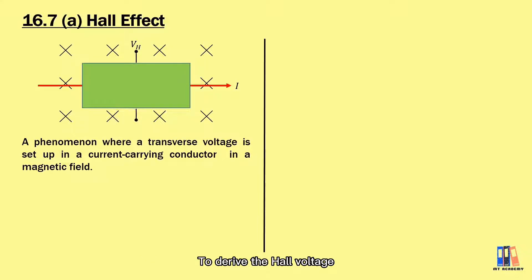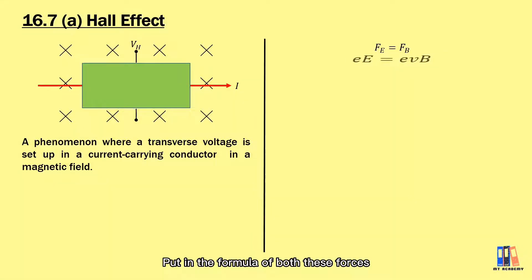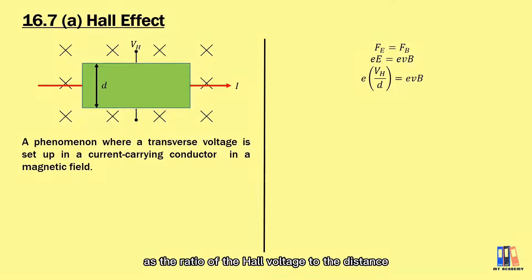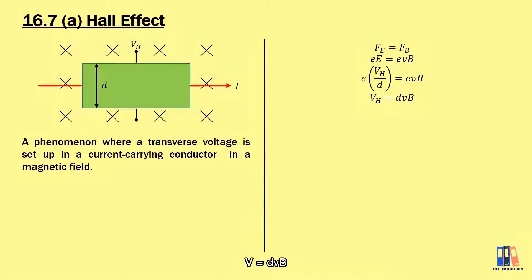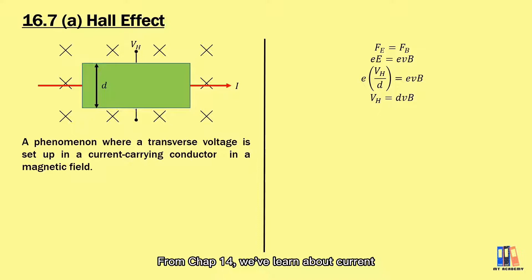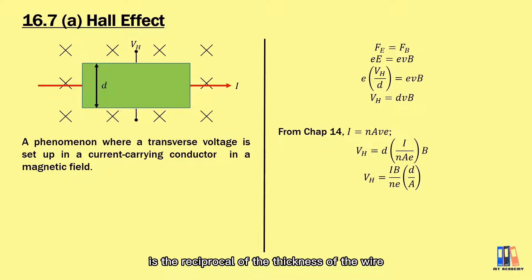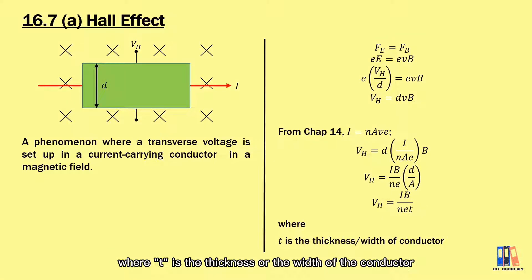To derive the Hall voltage, we start with the equation: electrostatic force equals magnetic force. Substituting the formulas for these forces, we replace the electric field strength with the ratio of the Hall voltage to the distance between the upper and lower surfaces, obtaining the expression: V_H = dVB. We can further derive the Hall voltage in terms of current. From chapter 14, current I = nAv, so we substitute the drift velocity as I divided by nAe. Rearranging and substituting d over A as the reciprocal of the thickness, the Hall voltage becomes V_H = IB over (net), where t is the thickness or width of the conductor.